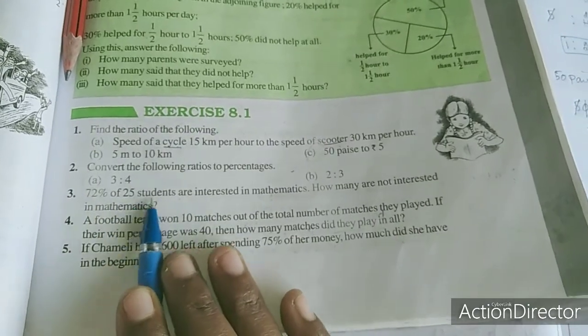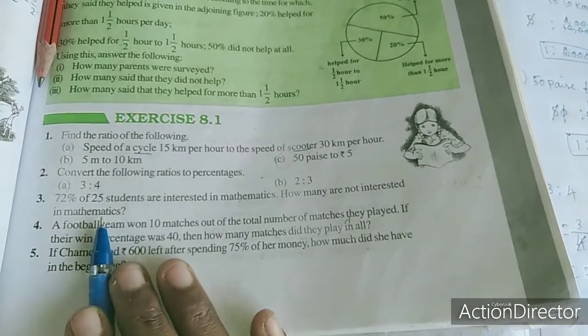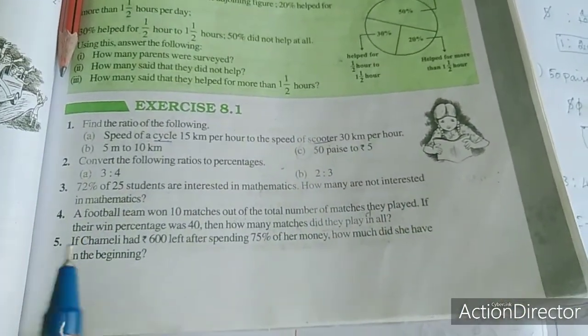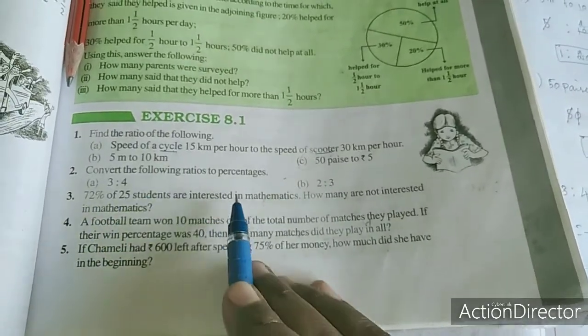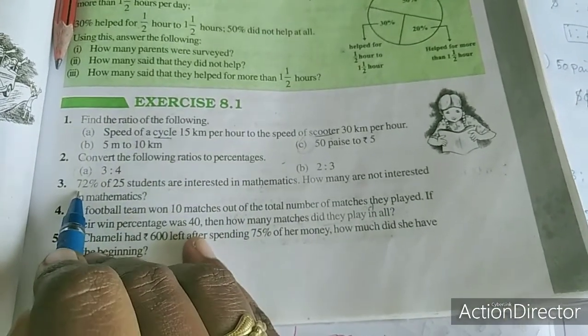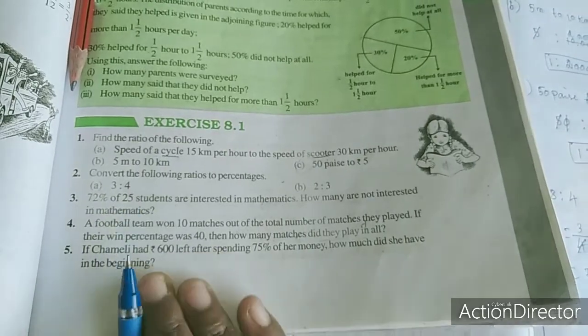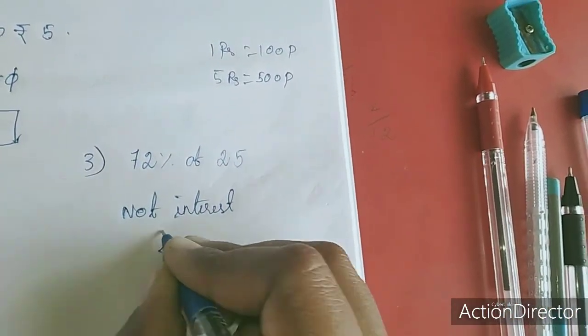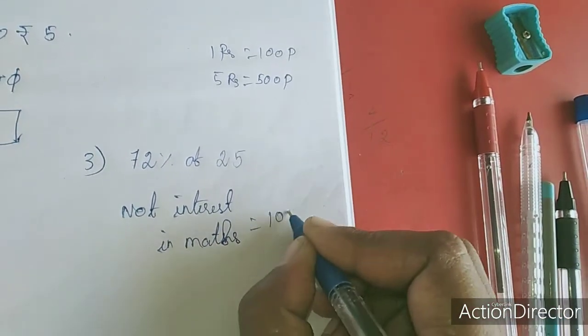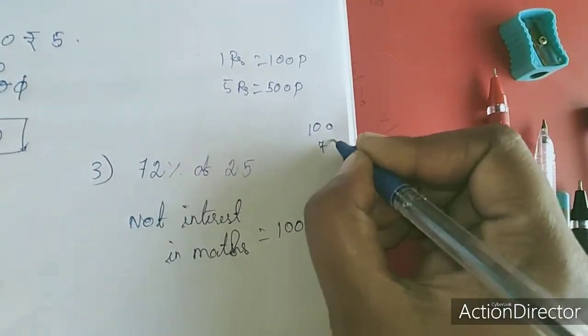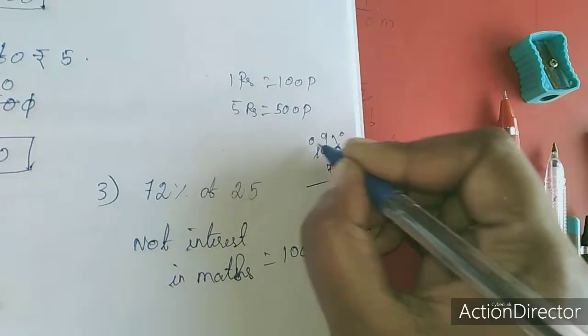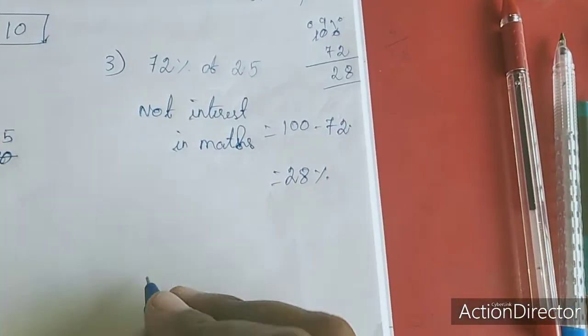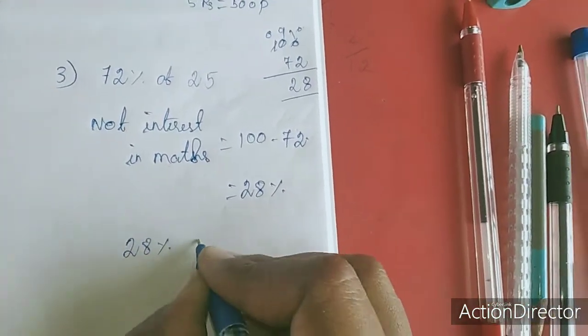Now I will move to the third sum. 72 percent of 25 students are interested in mathematics. How many are not interested in mathematics? Now we have to see here, so not interest in mathematics, that is 100 minus 72. Subtraction see here: 10, 9, this one becomes 0, so 8, 2. So balance percentage is 28 percent. But how many, they are asking numbers.